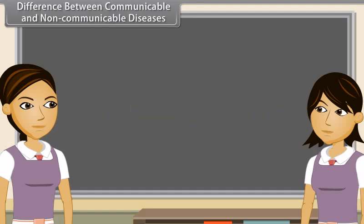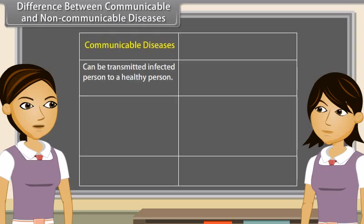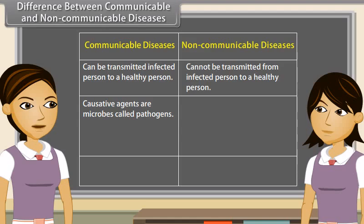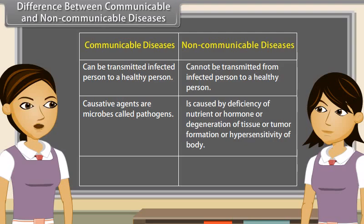Can you tell me the difference between communicable and non-communicable diseases? Communicable diseases can be transmitted from an infected person to a healthy person, while non-communicable diseases cannot be transmitted. Communicable diseases are caused by microbes called pathogens. Non-communicable diseases are caused by deficiency of nutrient or hormone, or degeneration of tissue, or tumour formation, or hypersensitivity of the body.